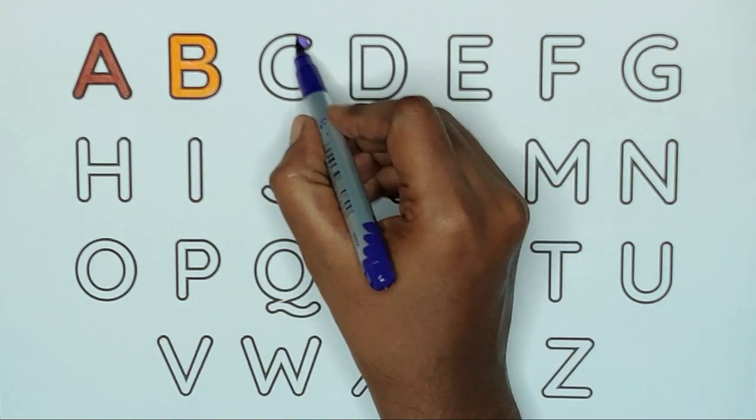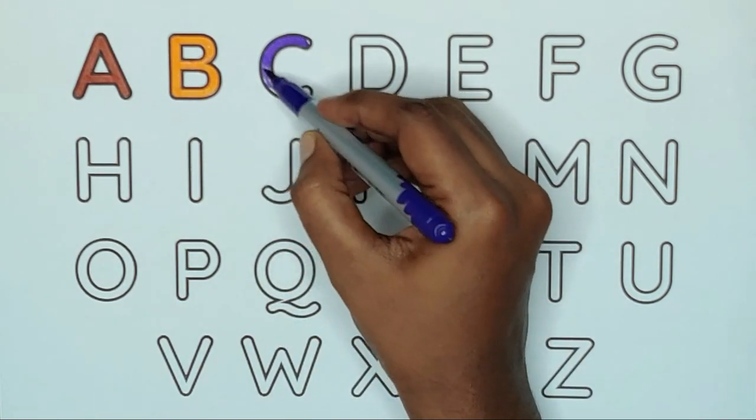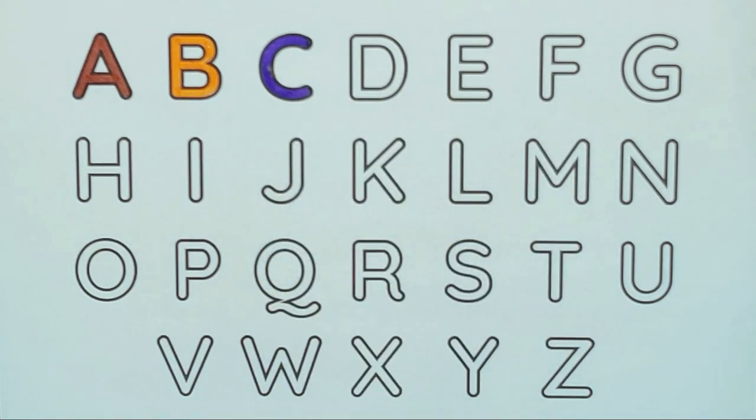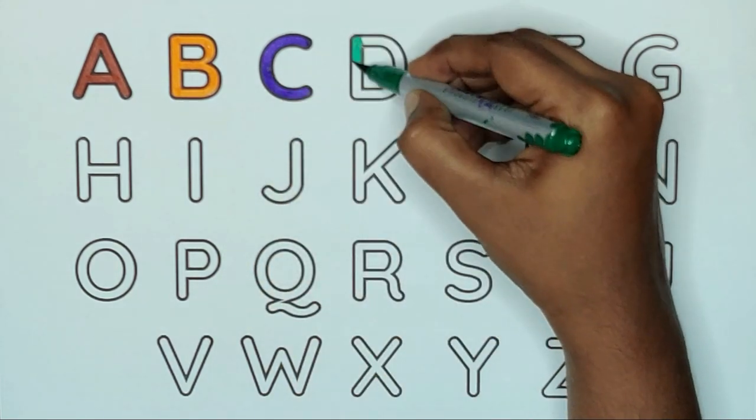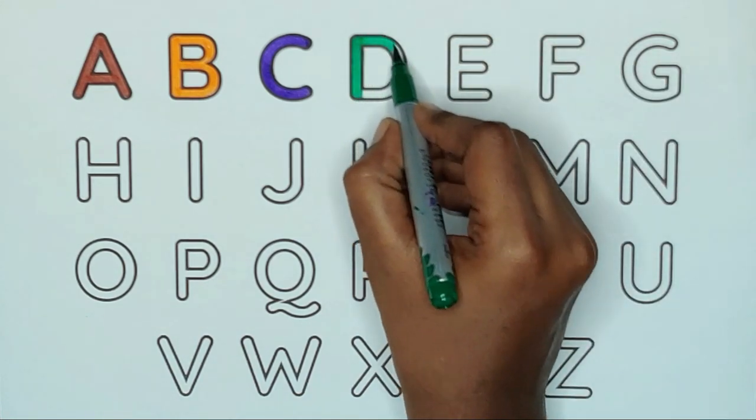Violet color, C, C for cow. Green color, D, D for duck.